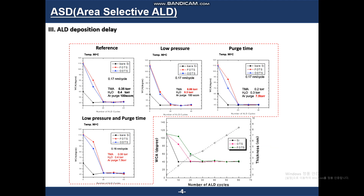This was intended to completely block the ALD process. I thought this could completely block the ALD deposition and I controlled several process conditions. But in this case, I also could not block ALD deposition completely. So after this, I needed to find another method.